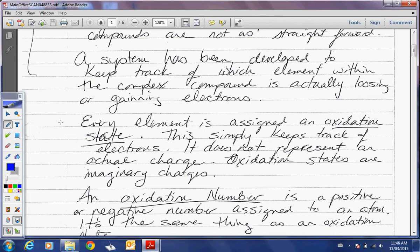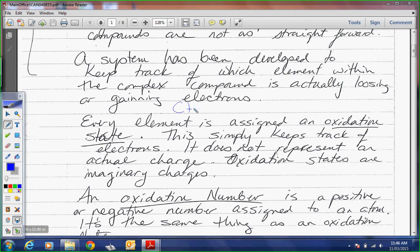Every element is assigned an oxidation state. This simply means that we keep track of the electrons. It does not represent an actual charge, but it's going to feel a lot like we're talking about ions. Okay? Because the oxidation state on Na+ is 1+. And the oxidation state on O2- is 2-. So it's going to feel a lot like we're talking about ions, but I need you to understand, because a lot of my 1020s do not understand, that CH3CH2OH has absolutely zero ions in it. Do you understand that? Every single one of these is a neutral atom. No ions.